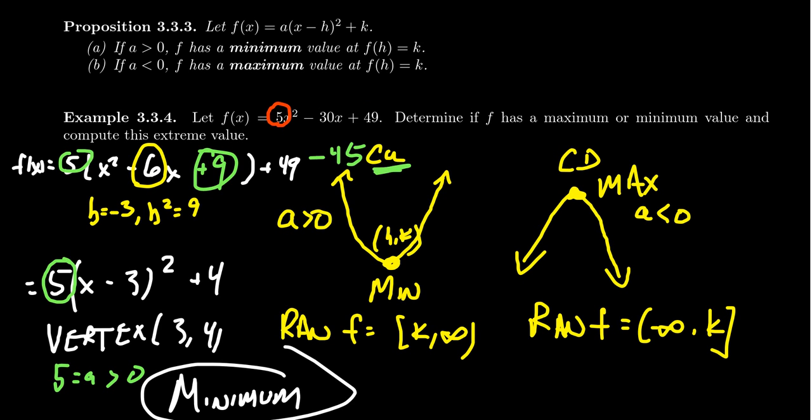you know, if you have a standard form ax² + bx + c—if you have this standard form versus the vertex form right here,